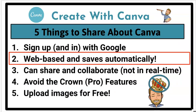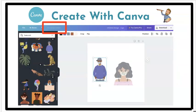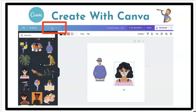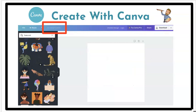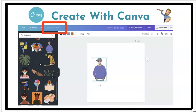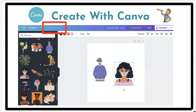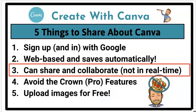Canva is web-based and saves automatically. As you add images, design elements, text, colors, and all sorts of things, you'll see that periodically it'll say 'all changes saved.' That's every few seconds. So students will not lose their work, so long as you wait until you see that 'all changes saved' message, which pops up every few seconds or so.